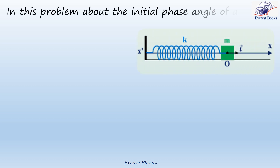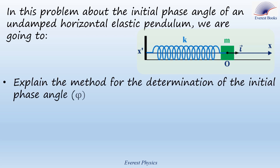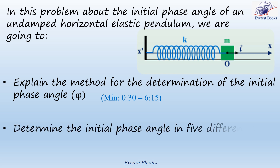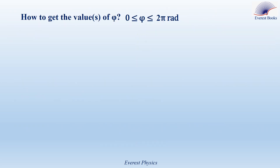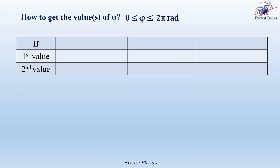In this problem about the initial phase angle of an undamped horizontal elastic pendulum, we are going to explain the method for the determination of the initial phase angle phi. We will determine the initial phase angle in five different cases, knowing that phi belongs to the interval 0 to pi radians.